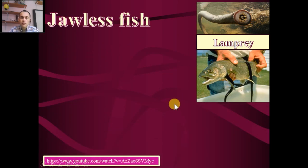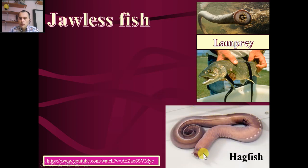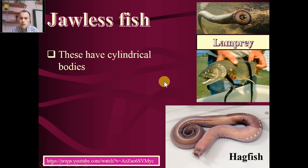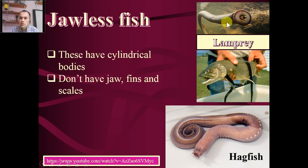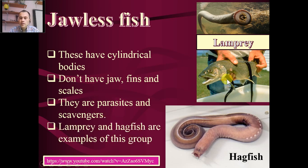The first subgroup of fish is jawless fish. As you see, they don't have any jaw, unlike normal fish. Their body is cylindrical. They have no jaw, no fins, and no scales — their body is very smooth. Examples are hagfish and lamprey. They may be parasites, meaning they live on living organisms, or they may be scavengers, meaning they eat dead animals. As you can see here, a lamprey is attached to a fish, sucking its blood — they are parasites that take food from other living fish.